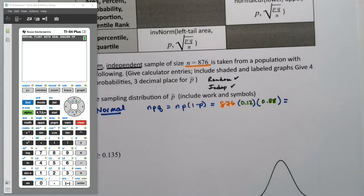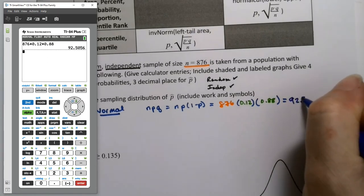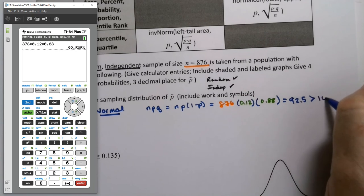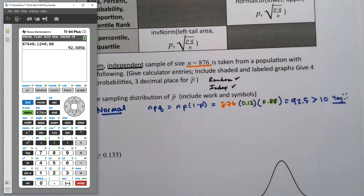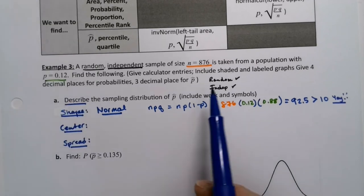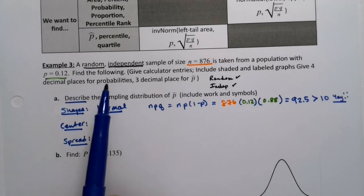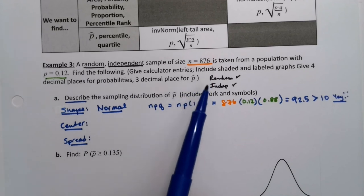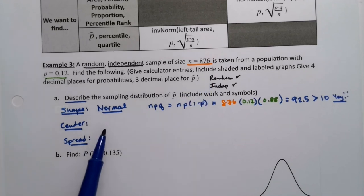Let me grab the calculator: 876 times 0.12 times 0.88. You could use parentheses as well if you liked. It's 92.5, and you know what? 92.5 is bigger than 10. So we proved normal. We didn't have to prove random and independent because they were given to us. Random and independent were given, normal we had to prove.